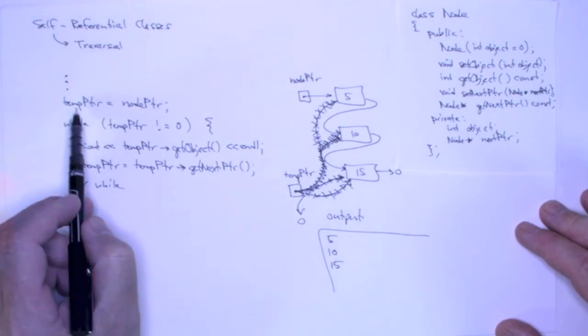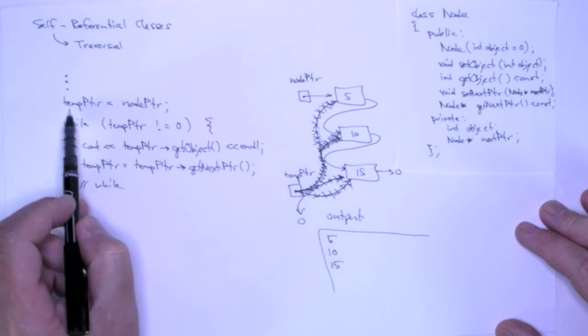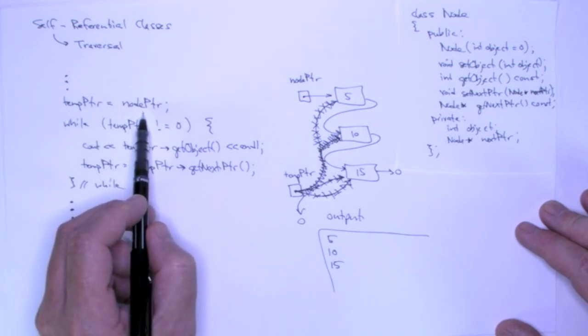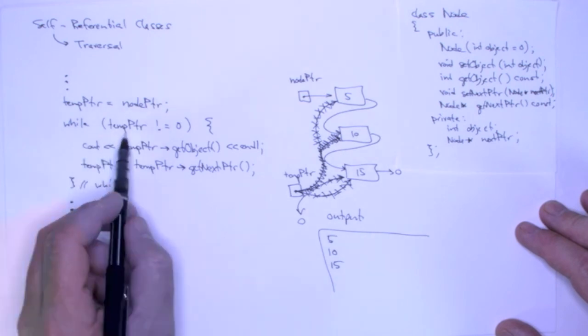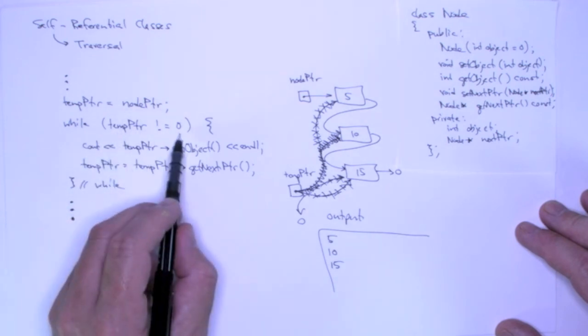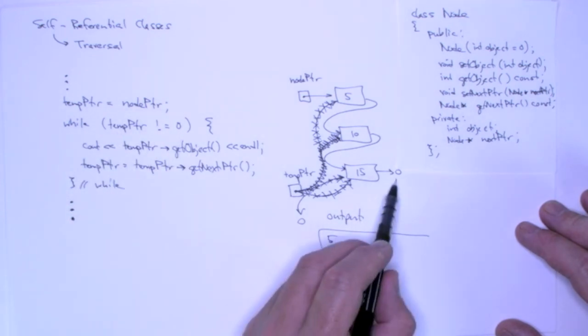And the traversal simply starts at the beginning with some pointer that's set to the head of the list. You iterate until that pointer becomes null, signifying that you have processed all the elements of the list.